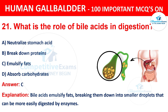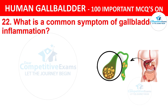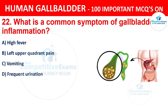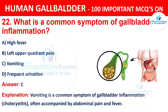Question 22: What is the common symptom of gallbladder inflammation? The correct answer is C, vomiting. Vomiting is a common symptom of gallbladder inflammation, often accompanied by abdominal pain and fever.